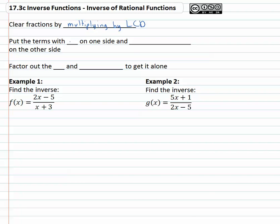Once we do that, we will put the terms with y on one side and everything else on the other side. That way, we can factor out the y and divide to get that y alone.